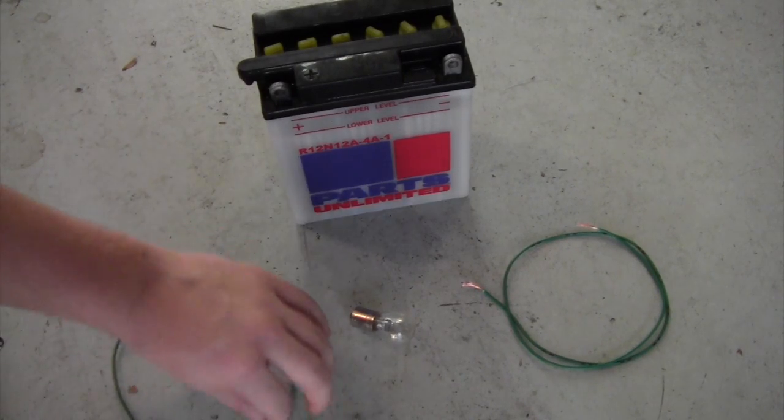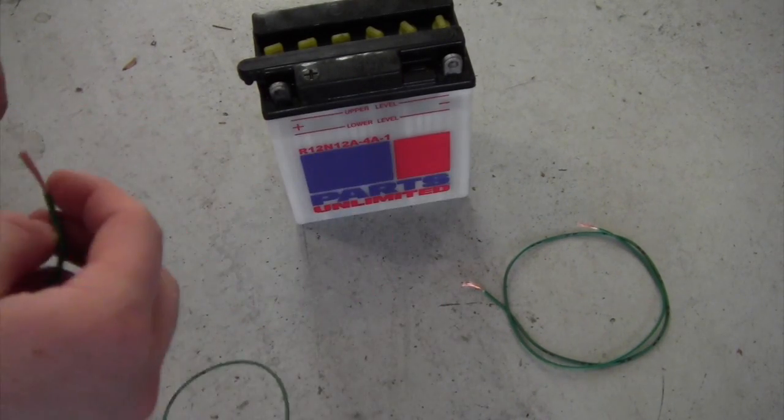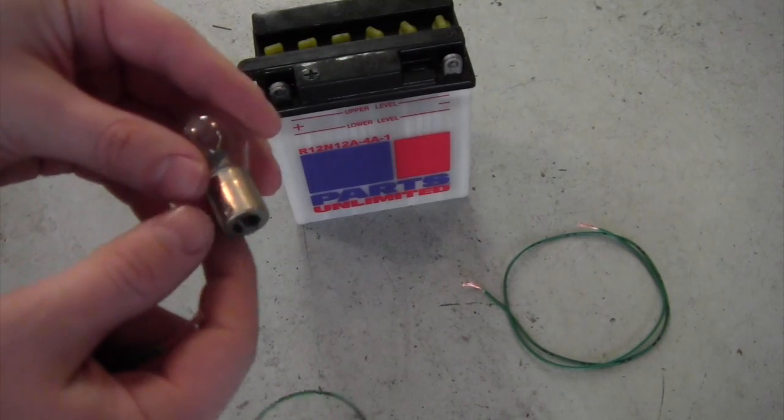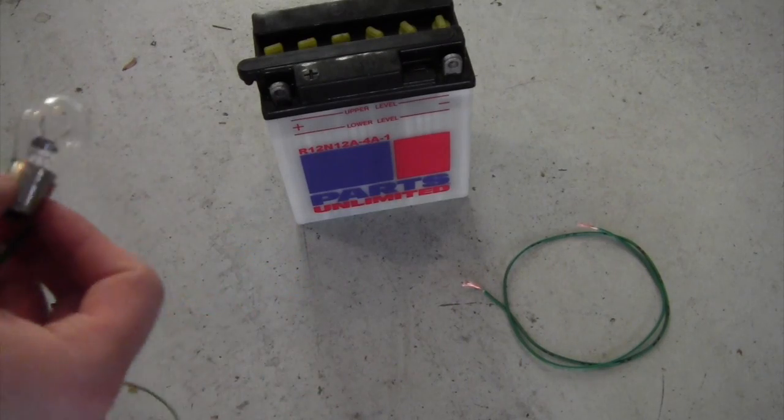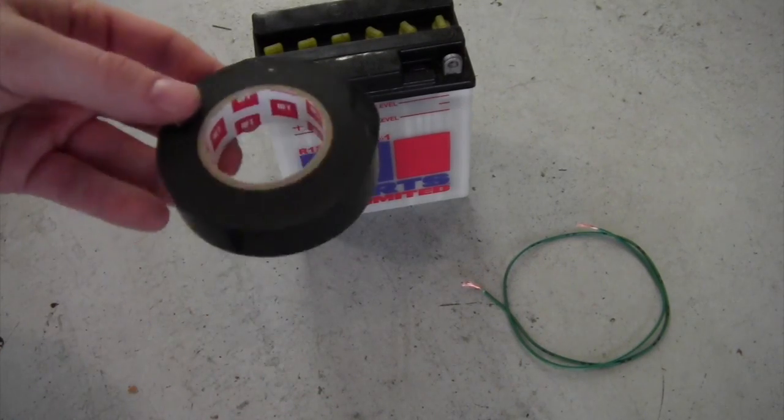Next thing we need to do is tape the first wire to the outside of the light bulb as you can see right here. And make sure you use electrical tape.